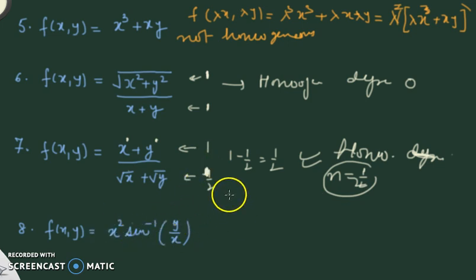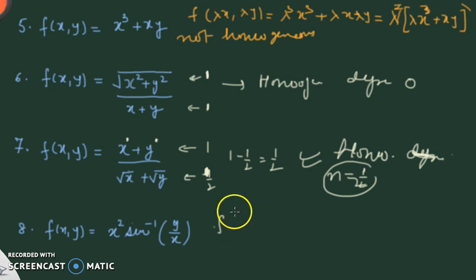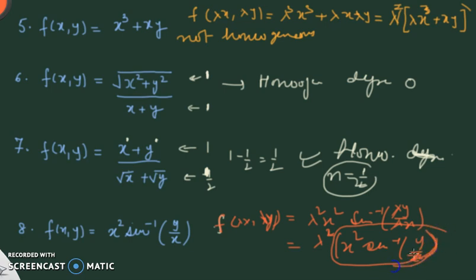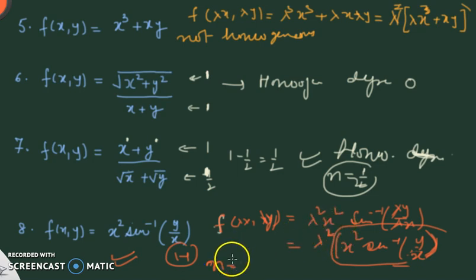Example 8: f(x,y) = x²·sin⁻¹(y/x). Putting f(λx, λy) = (λx)²·sin⁻¹(λy/λx) = λ²x²·sin⁻¹(y/x). The lambdas inside sin⁻¹ cancel, and λ² factors out. The original function is recovered, so it is a homogeneous function of degree 2.